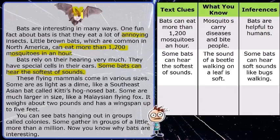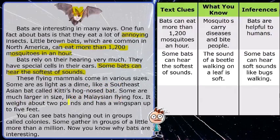So bats have extraordinary hearing — just look at the size of those ears! Those are gigantic ears for a small little face. Let's keep going. These flying mammals come in various sizes. Some bats are as light as a dime, like a Southeast Asian bat called Kitti's hog-nosed bat. Some are much larger, like the Malaysian flying fox — it weighs about two pounds and has a wingspan of up to five feet.